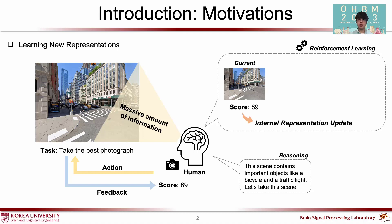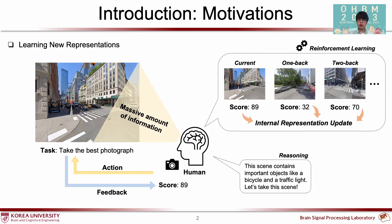For example, we tend to retrospect our previous actions when we learn a new task. So we hypothesize that variable histories could contribute to representation learning, and we name them as historical representations.